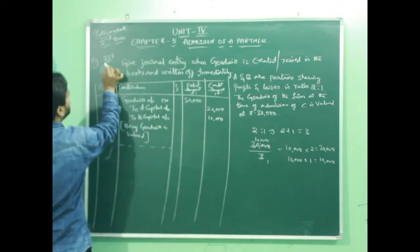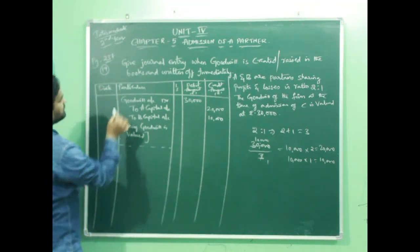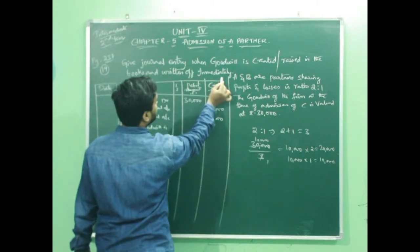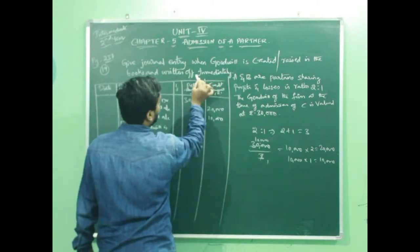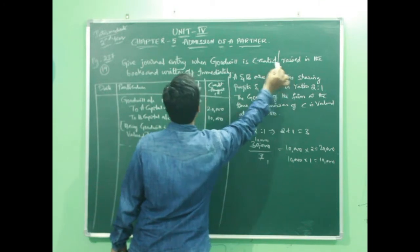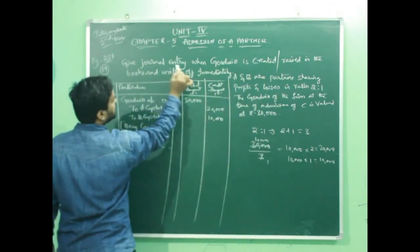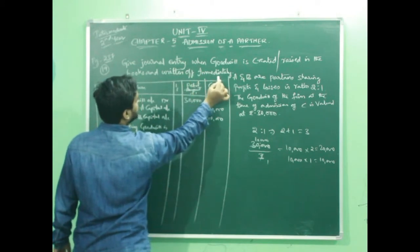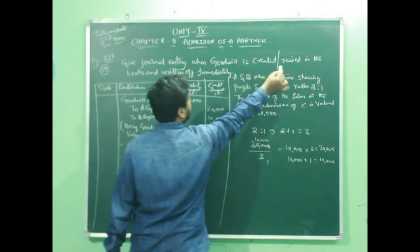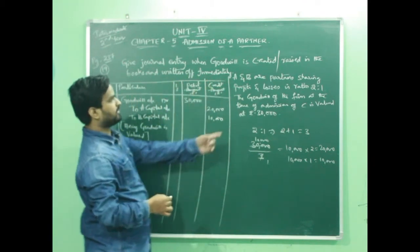Let us have a problem: page number 237, question number 19. In question number 19, it is given as: give journal entry when goodwill is written off immediately. But before writing it off, I am changing the question as: goodwill is raised or created in the books and written off immediately. So what we are doing here is: give journal entry when goodwill is created, raised in the books and written off immediately. Let us take the same example.